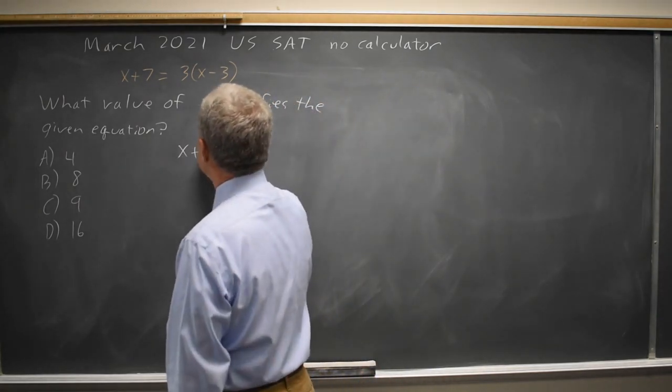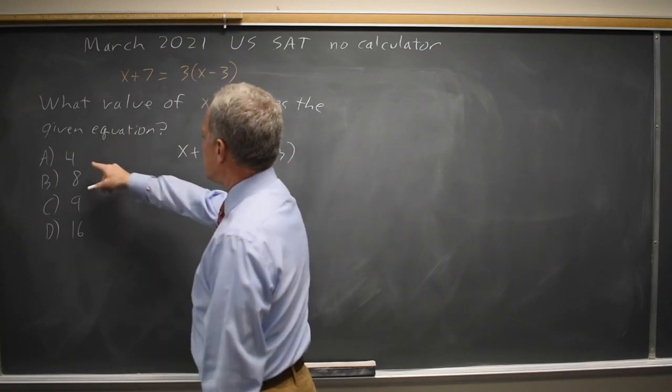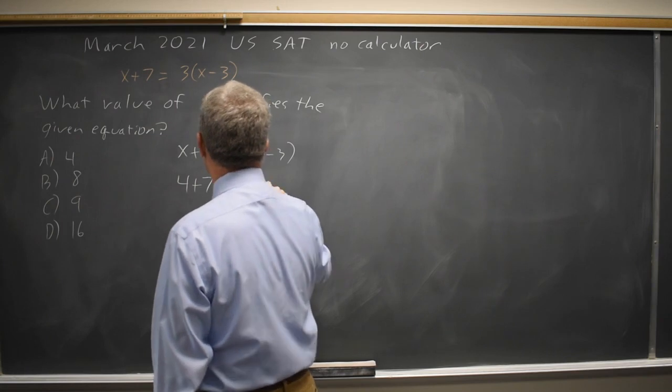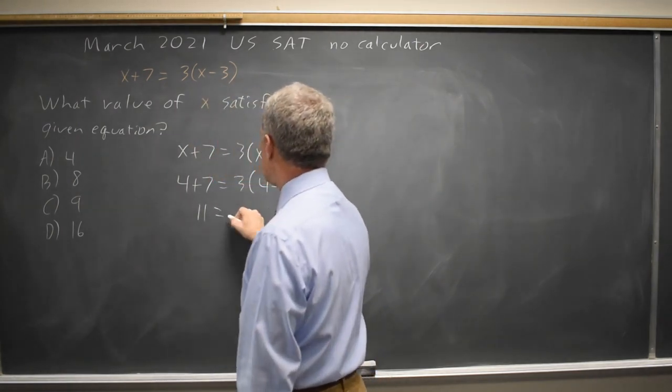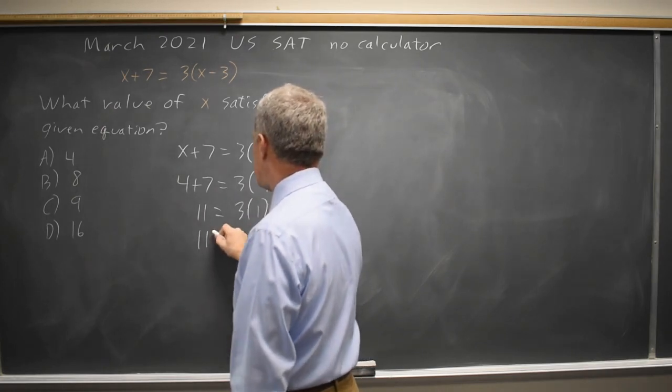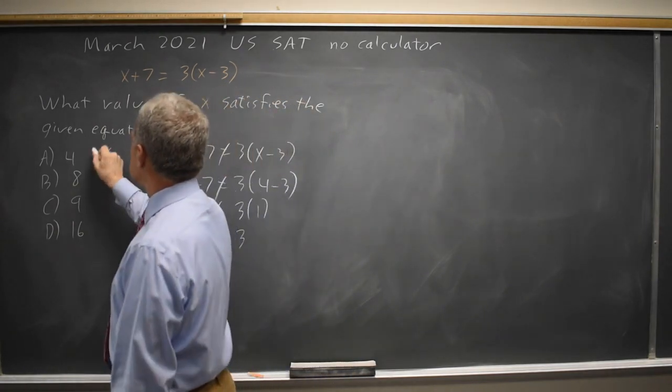So if I have x plus 7 equals 3x minus 3, and I plug in choice A, x equals 4, I get 4 plus 7 equals 3 times 4 minus 3. 4 plus 7 is 11. 4 minus 3 is 1. So that says 11 equals 3, which is of course not true. Choice A is not correct.